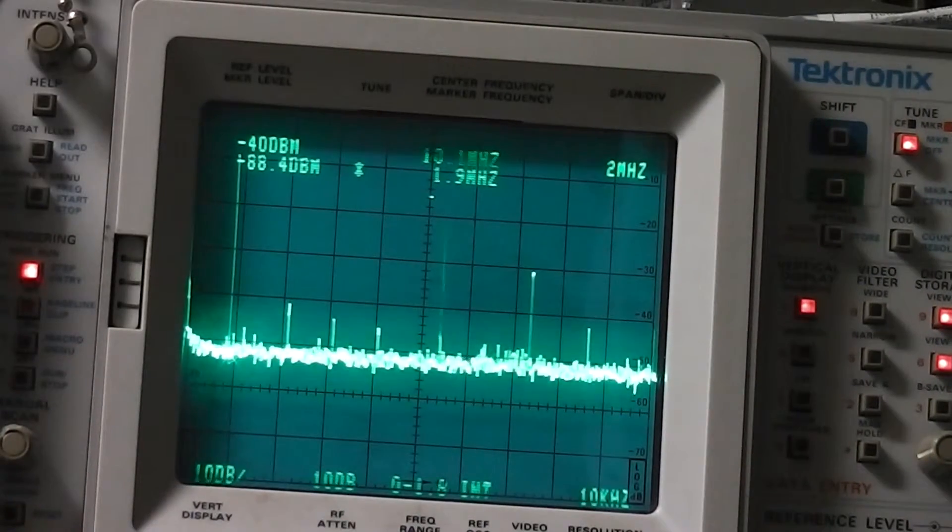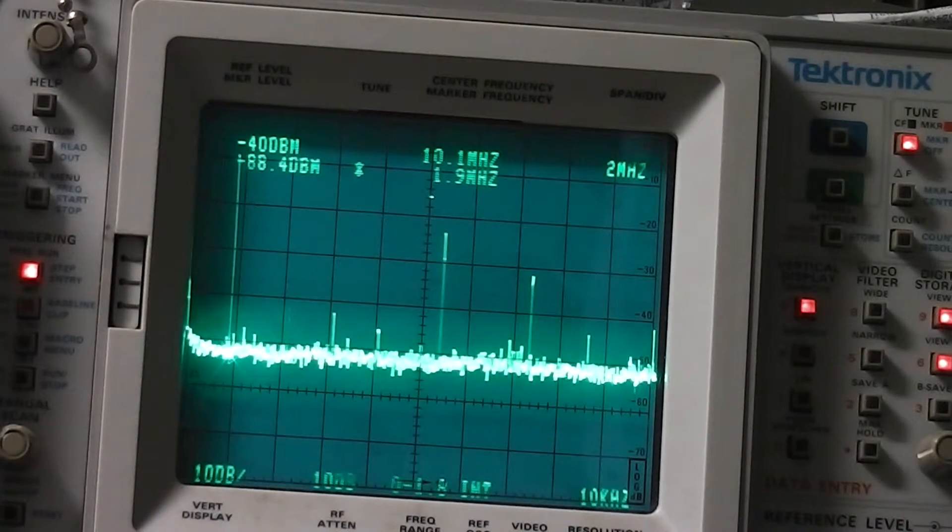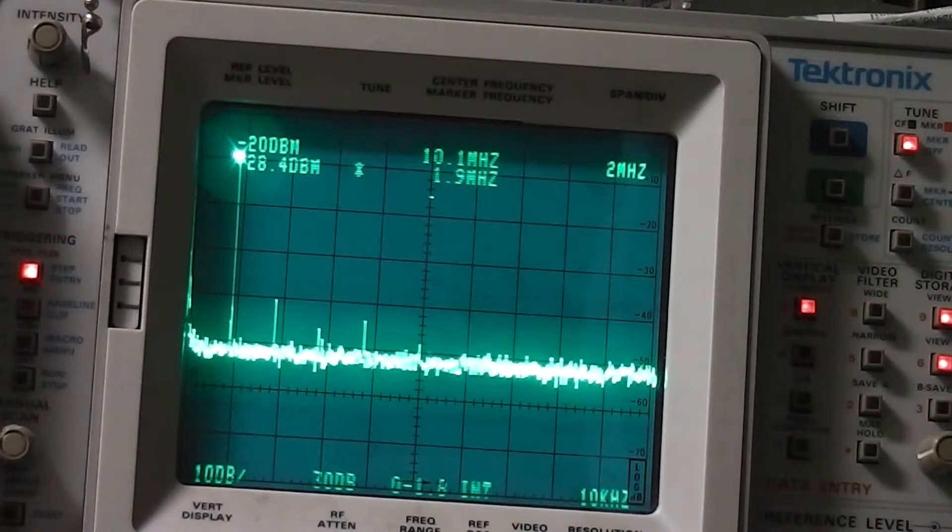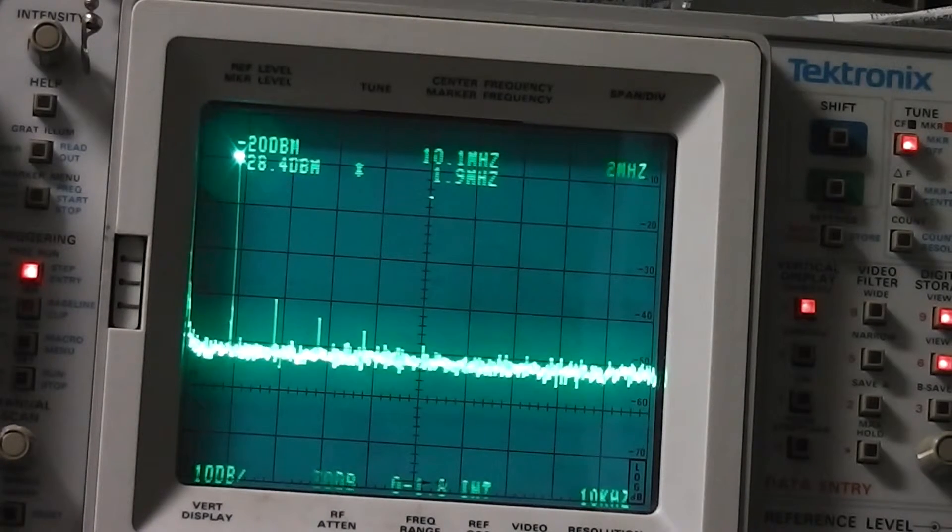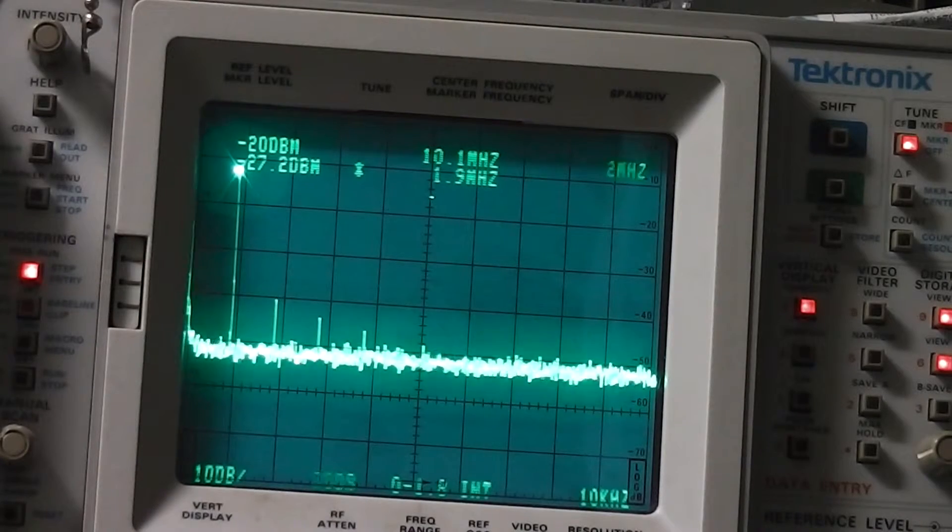I'm connected to the output of the mixer and you can see the wanted signal on the left, with lots of unwanted signals to the right. This is the signal after it's gone through the bandpass filter. As you can see, it's a lot cleaner than it was, with just the harmonics remaining.